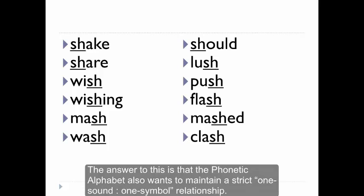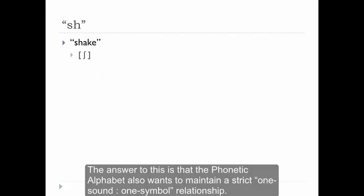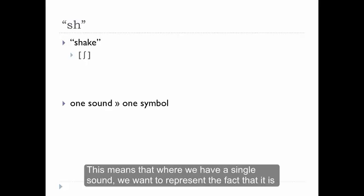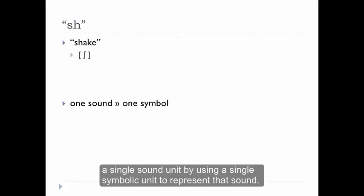The answer to this is that the phonetic alphabet also wants us to maintain a strict one sound, one symbol relationship. This means that where we have a single sound, we want to represent the fact that it is a single sound unit by using a single symbolic unit to represent that sound.